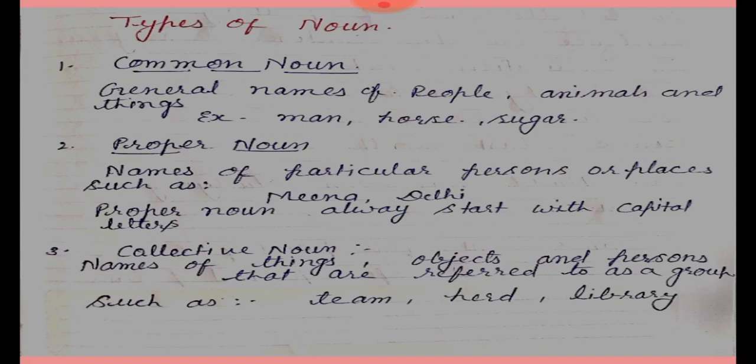Second, proper noun. Proper noun is a particular name. Common noun is a general name and proper noun is a particular name — the name of a specific place or person, such as Meena, Delhi. Always remember that a proper noun always starts with a capital letter, not a common noun.